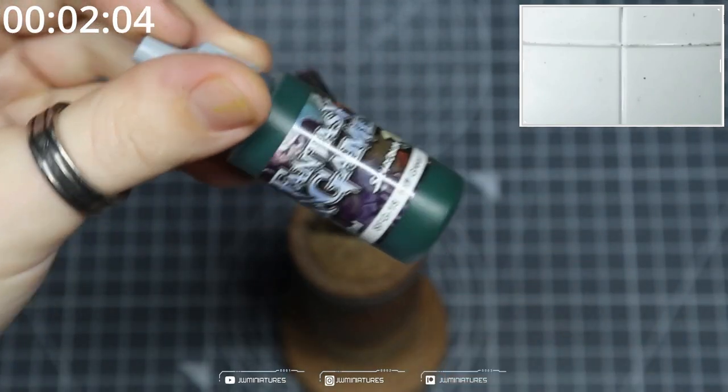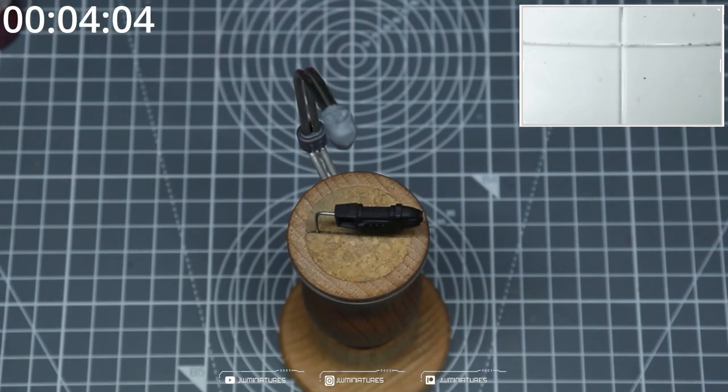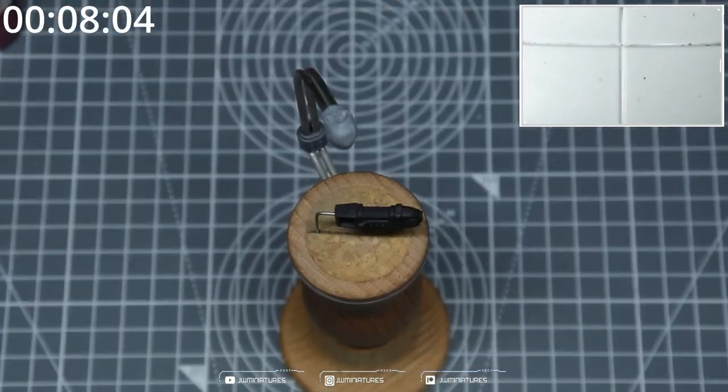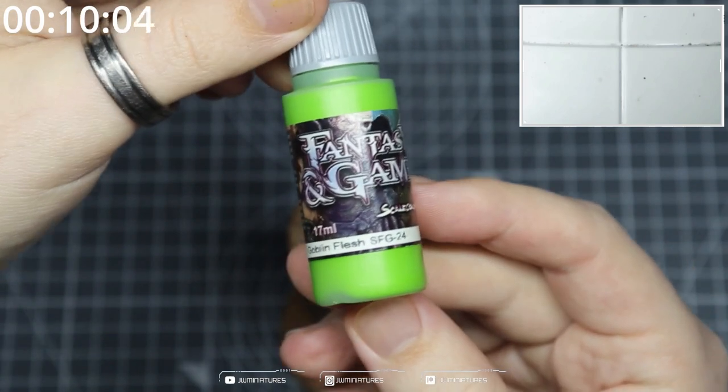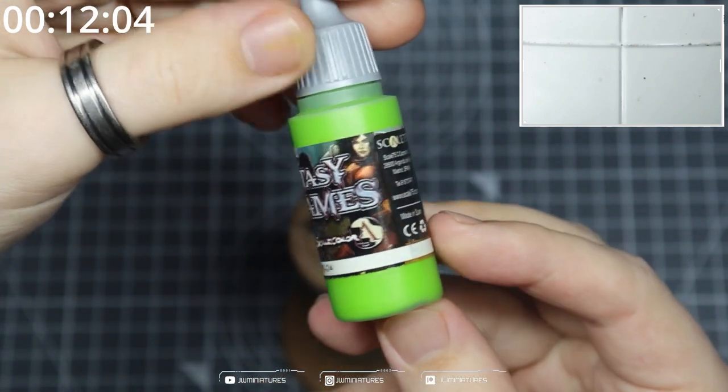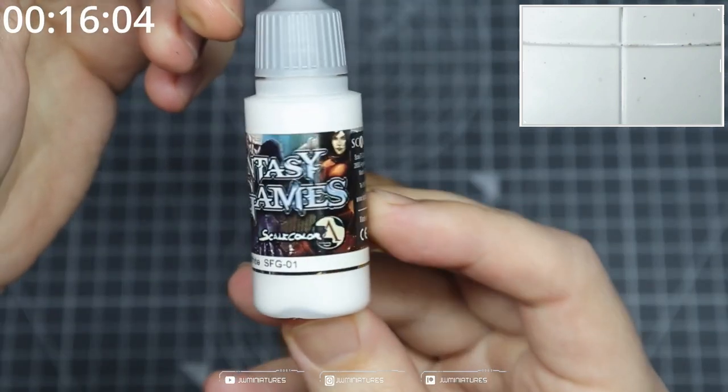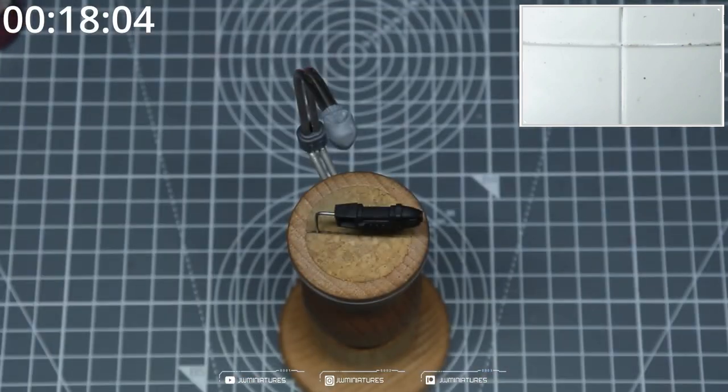Okay, the paints you'll need today will be Rift Green, but you can substitute these with any other color or hue. Green Skin Flesh, Goblin Flesh or any obnoxiously bright green, and Purity White. These are all from the Fantasy and Games range, but you can use any range that you want.